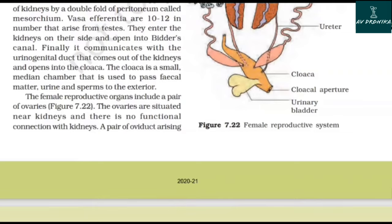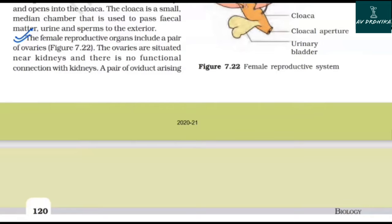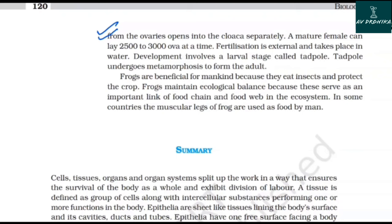The female reproductive organs include a pair of ovaries situated near the kidneys, with no functional connection with them. A pair of oviducts arising from the ovaries opens into the cloaca separately. A mature female can lay 2,500 to 3,000 ova at a time. Fertilization is external and takes place in water. Development involves a larval stage called the tadpole, which undergoes metamorphosis to form the adult. Frogs are beneficial to mankind because they eat insects and protect crops. They also maintain ecological balance by serving as an important link in food chains and food webs in the ecosystem.